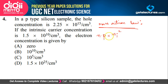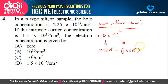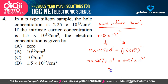The hole concentration P is 2.25 × 10^15 and NI is 1.5 × 10^10. Solving NP = NI²: N equals (1.5 × 10^10)² divided by (2.25 × 10^15), which gives N equals 10^5 per cm³. So the electron concentration is 10^5 per cm³, which is option C. The correct answer is option C.